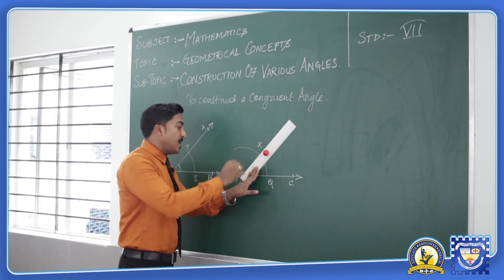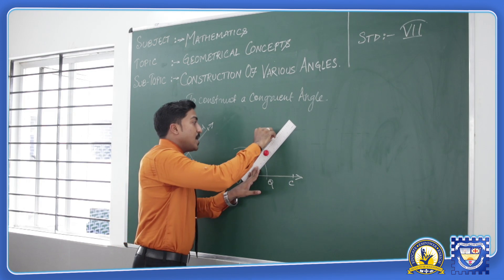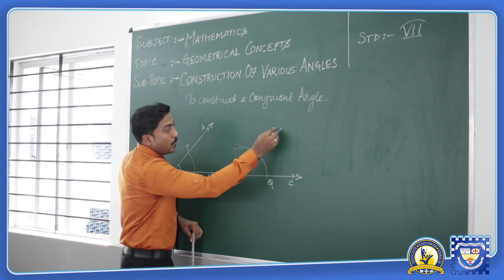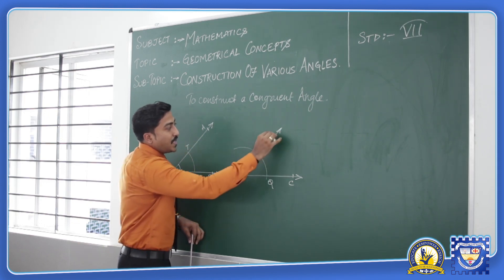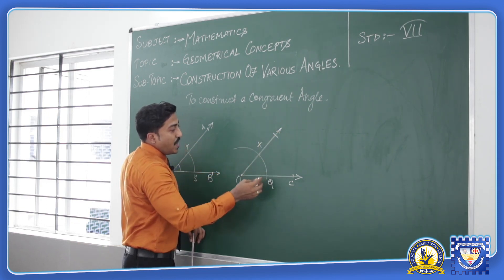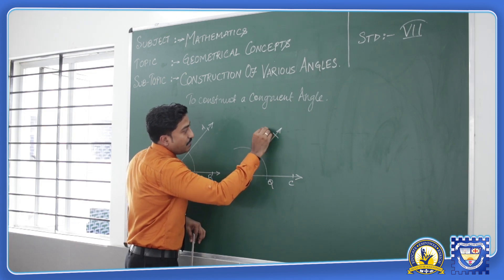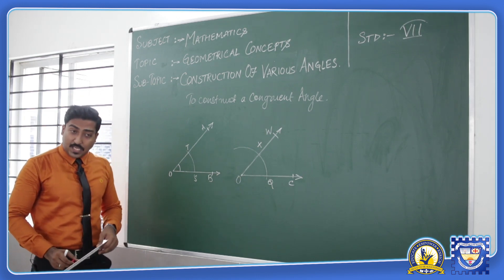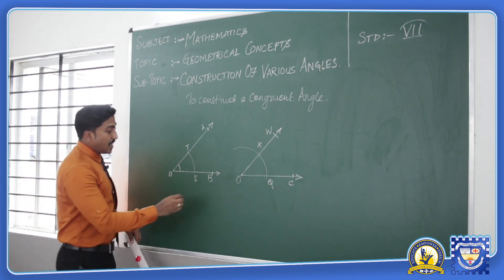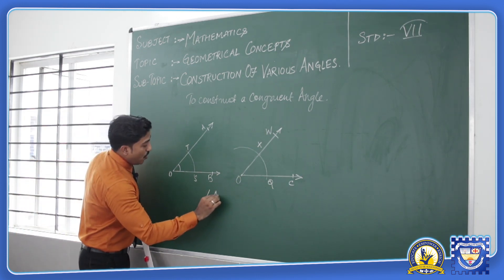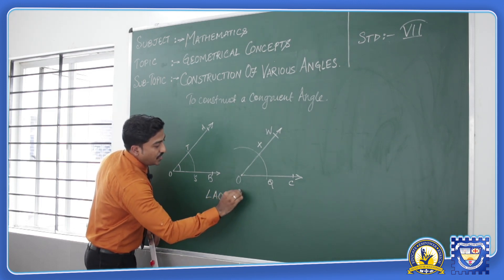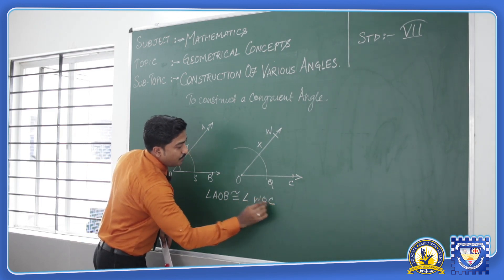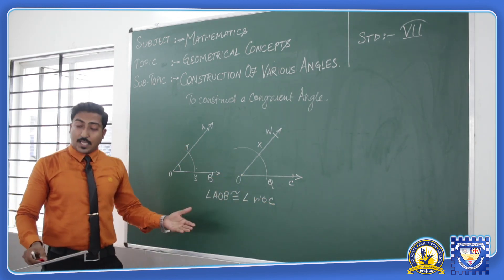With the help of the ruler we will join the two points O and X, keeping the ruler straight and ensuring the two lines coincide. After making the points coincide I will draw a straight line to get an angle. I will put an arrow over here and add another marking as W. Hence we have two angles which are exactly equal and congruent, so angle AOB is congruent to angle WOC, meaning these two angle measurements are exactly equal.